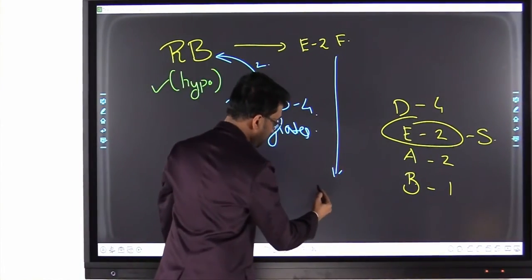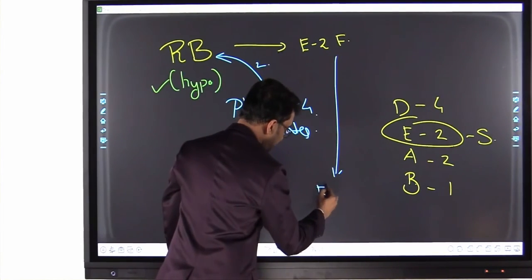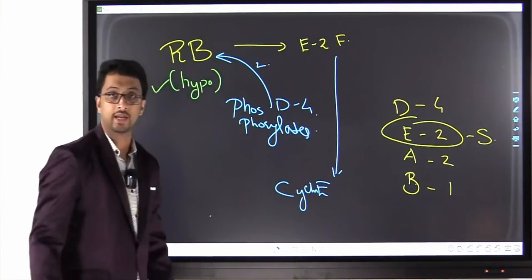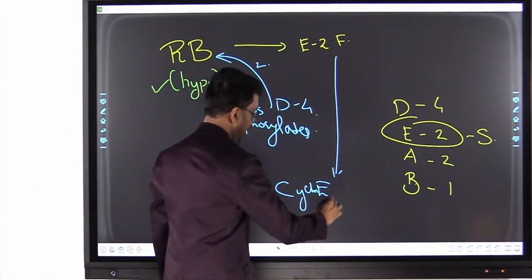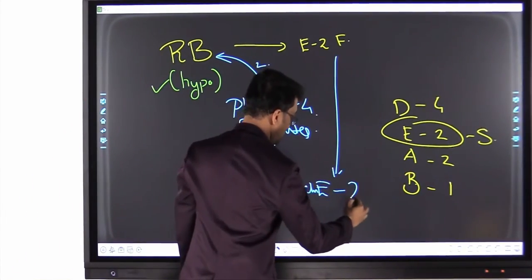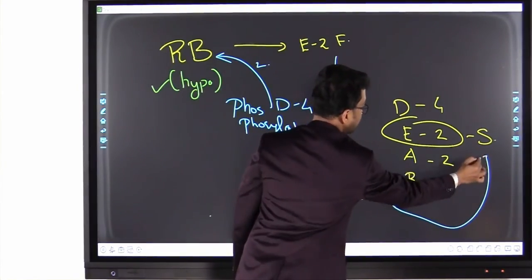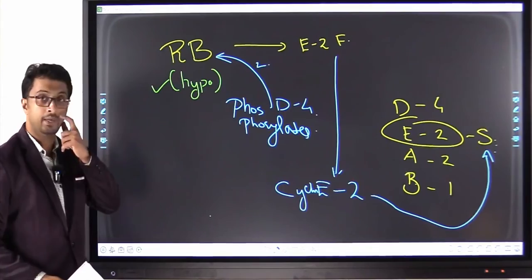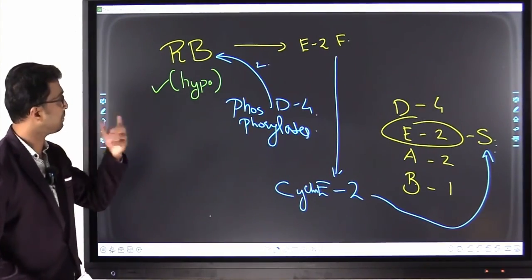The net effect is cyclin E2F gene is active and cyclin E is activated or cyclin E is synthesized and E combines with 2 and thus you get the S phase continuing. So this is the role of RB gene. This is the importance of RB gene.